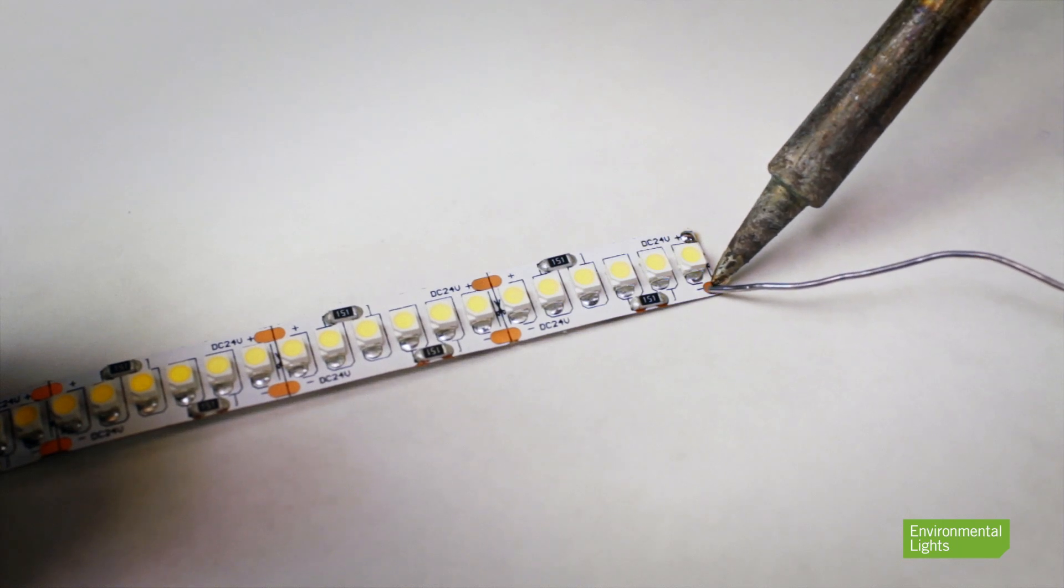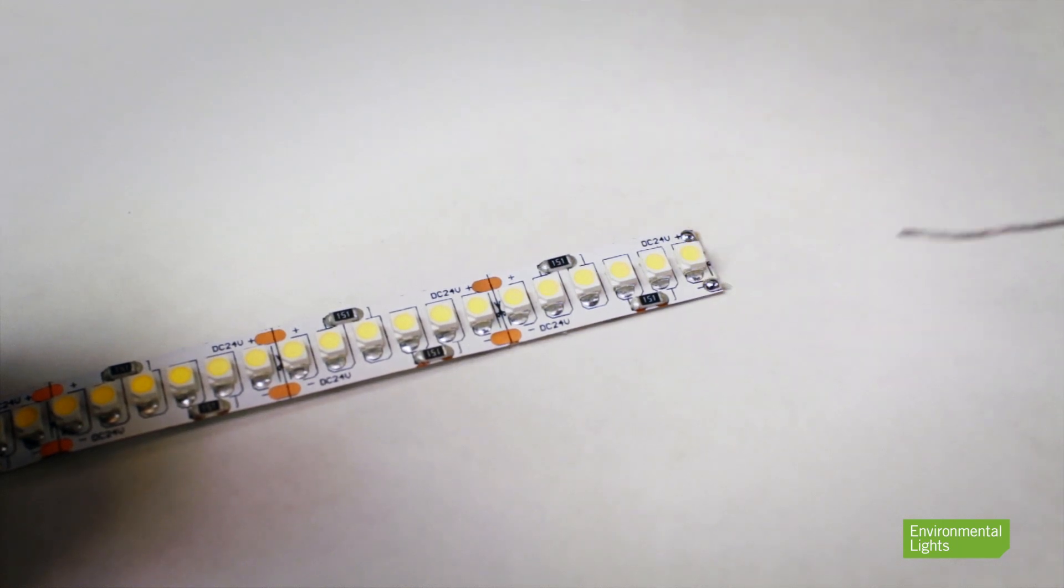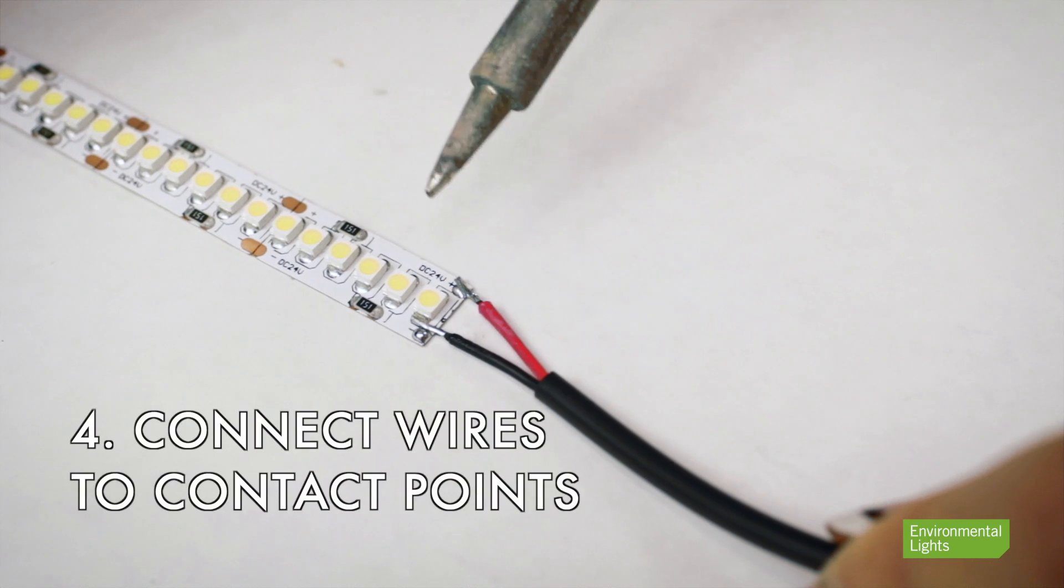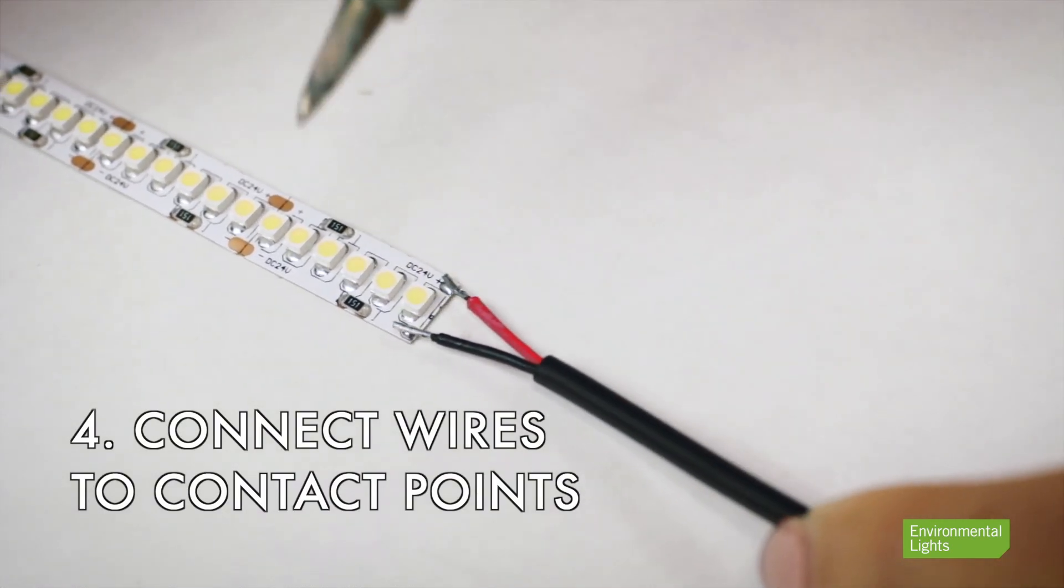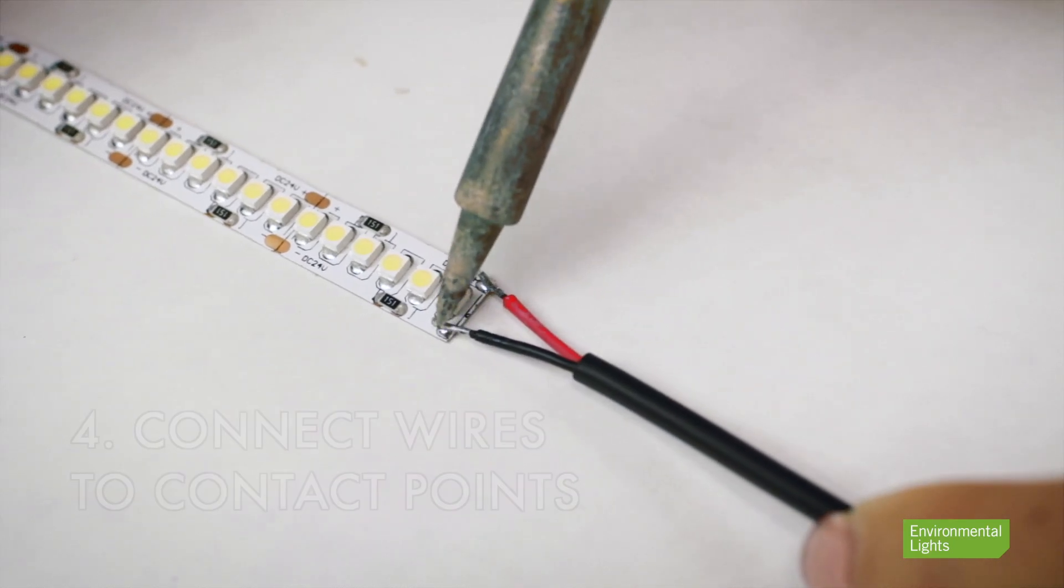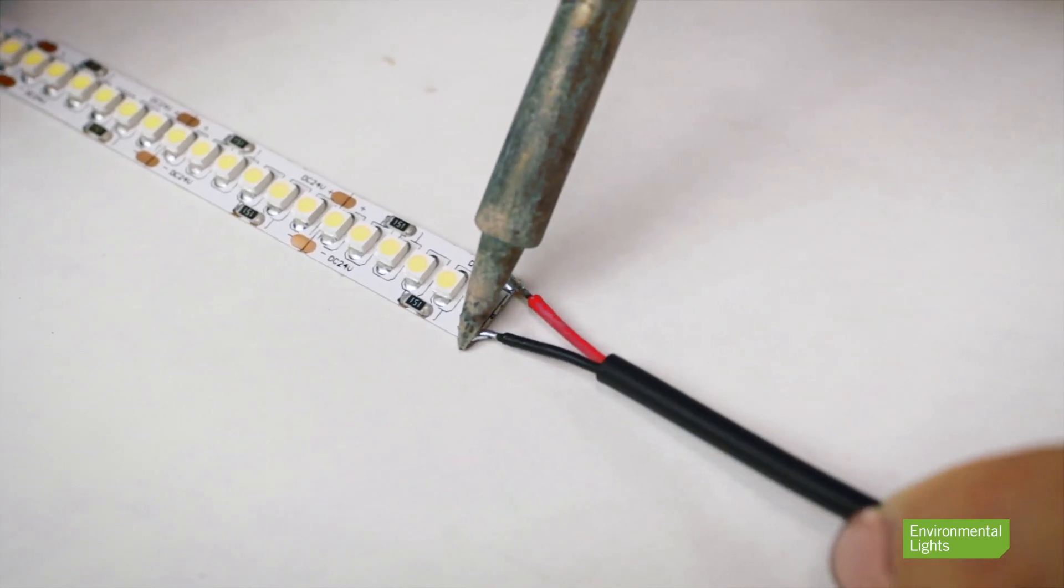Now, since you already have solder on both the wire and LED strip, simply use the iron to attach the wire onto the strip's contact points, making sure to connect the correct end of the wire to its corresponding contact point.